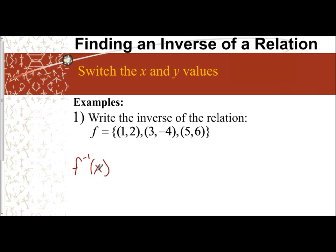This is read as the inverse of f is equal to, and when I do the inverse, all I do is just switch the x and y values. So this becomes (2, 1). This one becomes (-4, 3). This one becomes (6, 5).